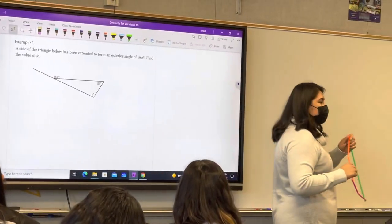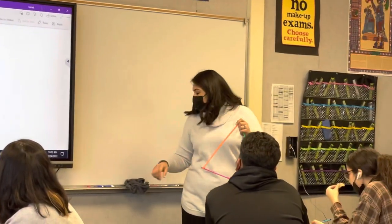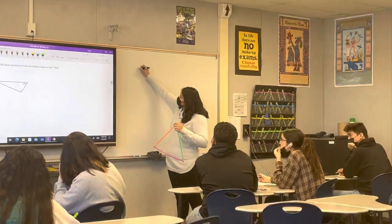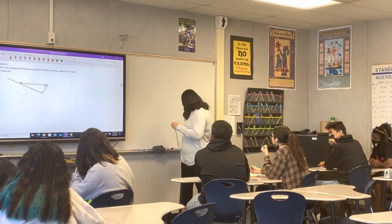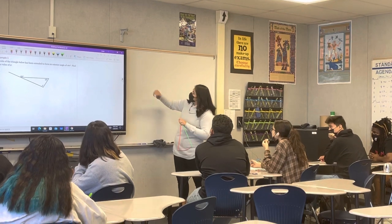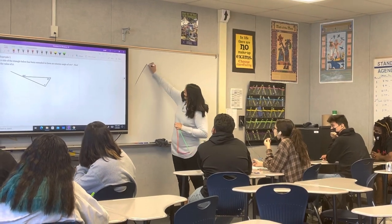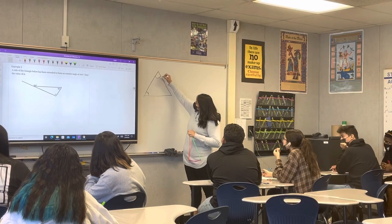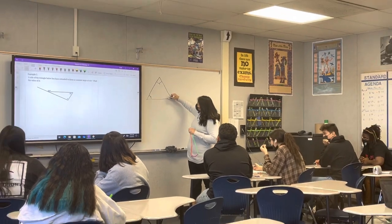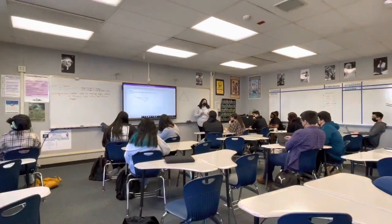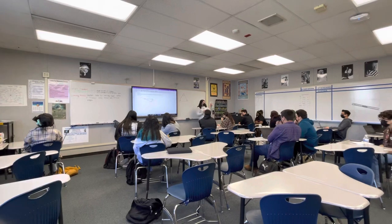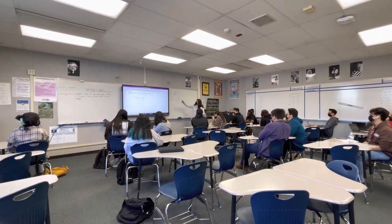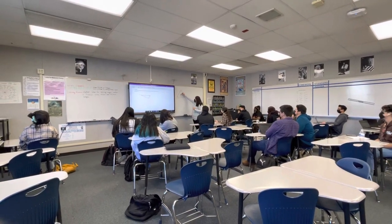What do you know about a triangle? What are some characteristics of a triangle? Three sides. Three angles. Three sides, three angles. And what else? It equals to 180.